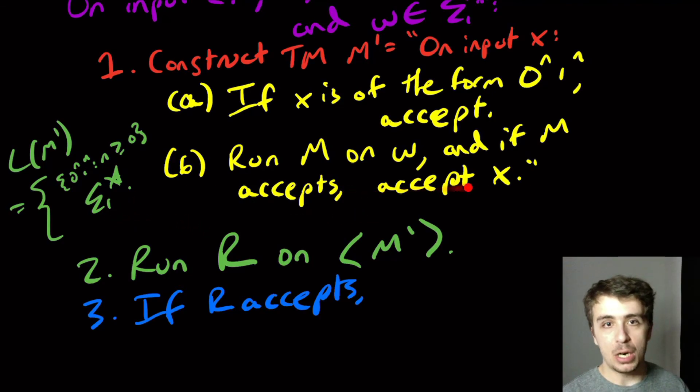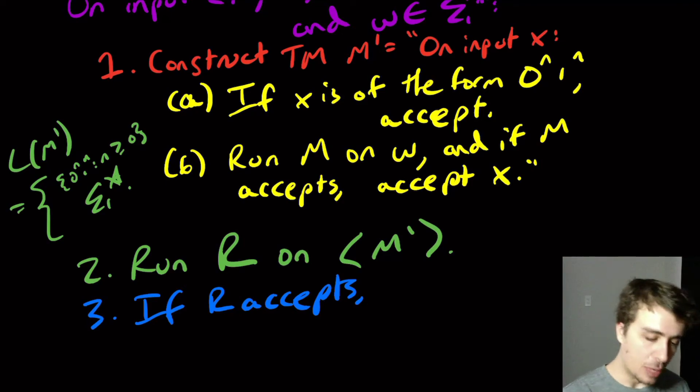If it's sigma star, that means this step had to succeed, which means M had to accept W. So we're solving the M accepts W problem, ATM. And so here we will accept for this same reason.